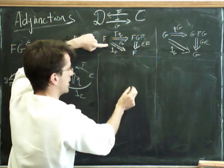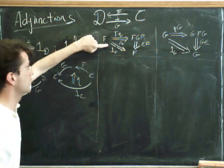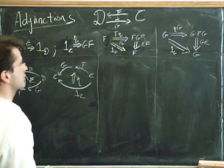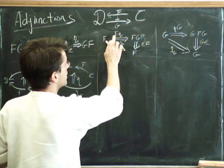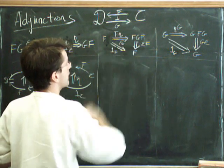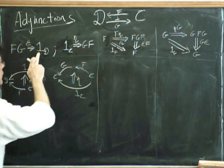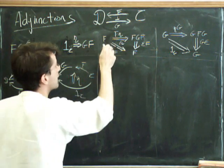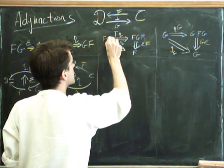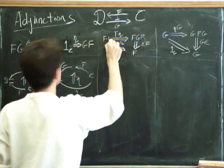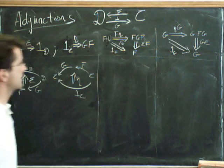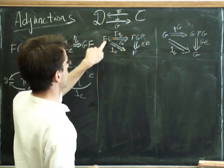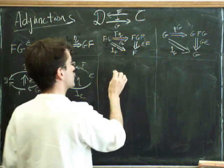So, what we have to do is we have to start with F and apply F eta to go to FGF. Now, eta goes from one to GF. So, I guess secretly I should be sticking on a little one C there. It just makes sense if I just put that there for now. So, let's go from F1C to FGF. So, let's just write FGF. That's going to be the middle bit.